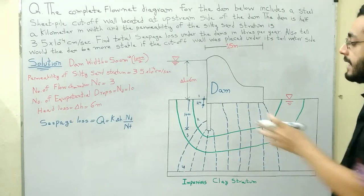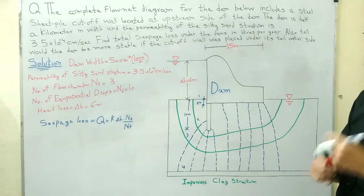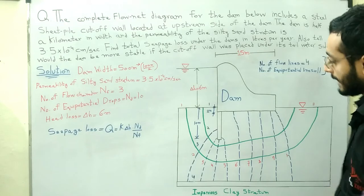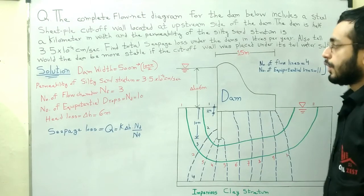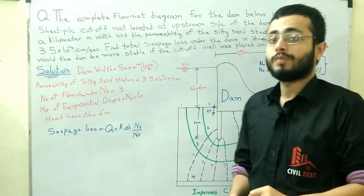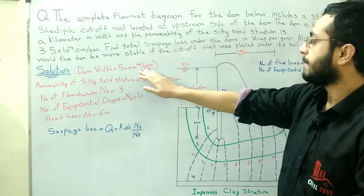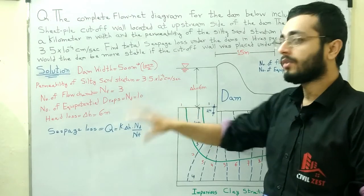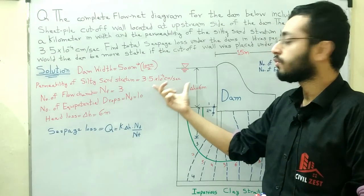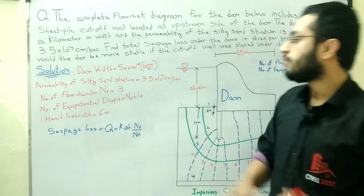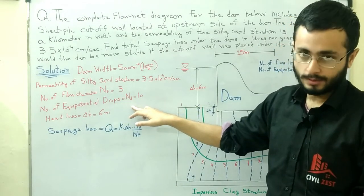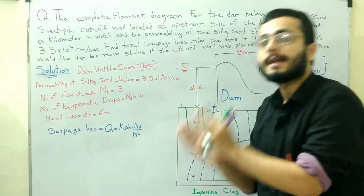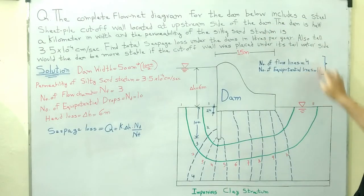To summarize: number of flow lines = 4, and number of equipotential lines = 11. Now, the number of flow channels Nf = number of flow lines − 1 = 3, and the number of equipotential drops Nd = number of equipotential lines − 1 = 10. It is important to remember that in the formula, Nf refers to flow channels, not flow lines.